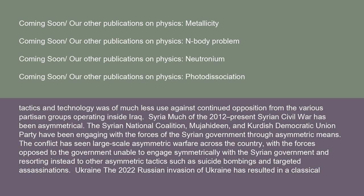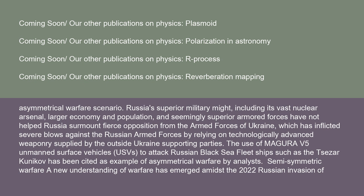The 2022 Russian invasion of Ukraine has resulted in a classical asymmetric warfare scenario. Russia's superior military might — including its vast nuclear arsenal, larger economy and population, and seemingly superior armored forces — has not helped Russia surmount fierce opposition from Ukraine's armed forces, which has inflicted severe blows by relying on technologically advanced weaponry supplied by outside supporting parties. The use of Magura V-5 unmanned surface vehicles (USVs) to attack Russian Black Sea Fleet ships has been cited as an example of asymmetric warfare by analysts.